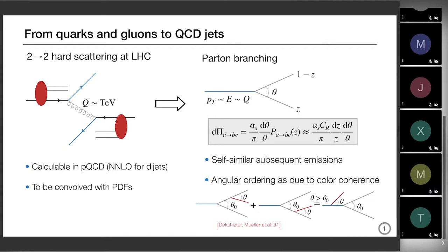We start with a pp collision at the LHC, for example. A parton is kicked out from the proton and interacts with another parton, exchanging for example a gluon at the TeV scale. This quark-quark interaction will produce in principle a pair of back-to-back quarks. This process — the matrix element — is calculable in perturbative QCD, and the state of the art right now is next-to-next-to-leading order.